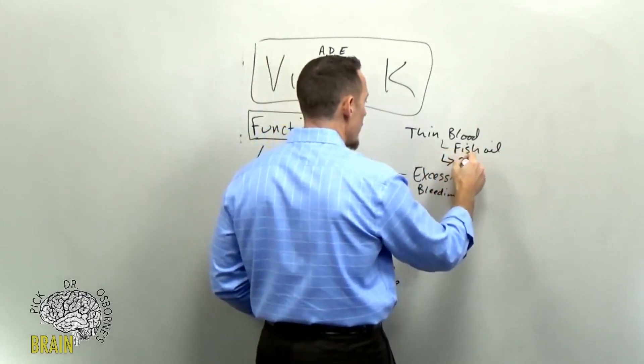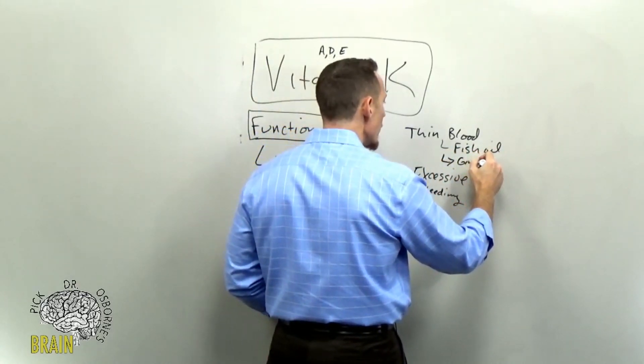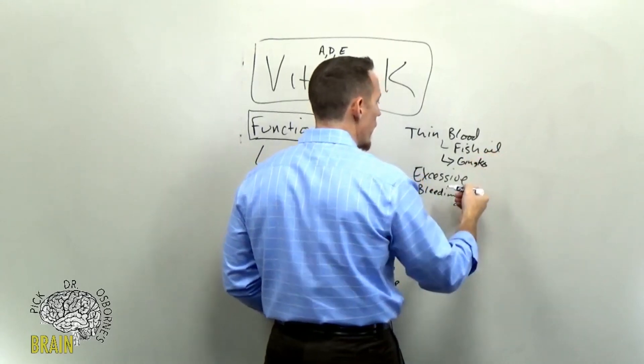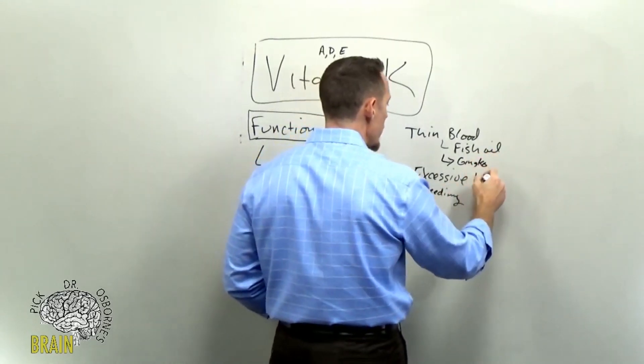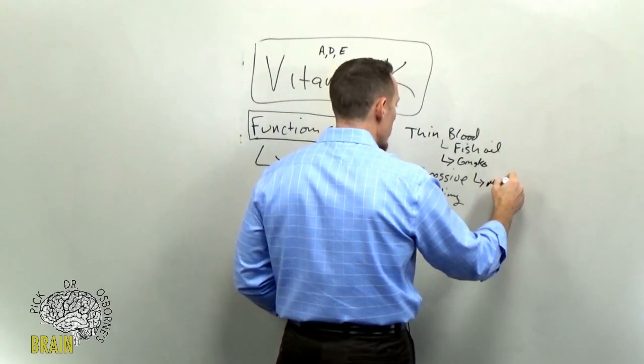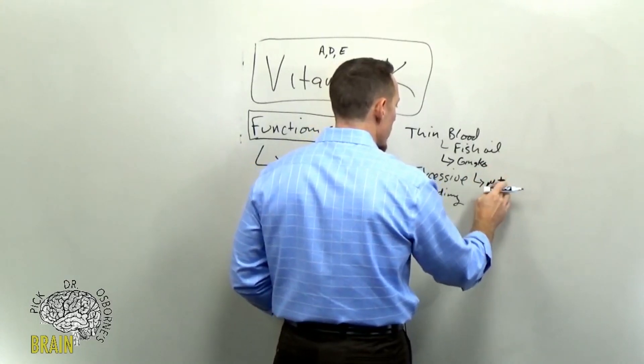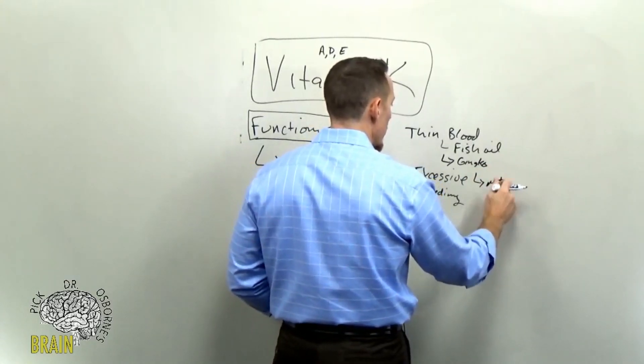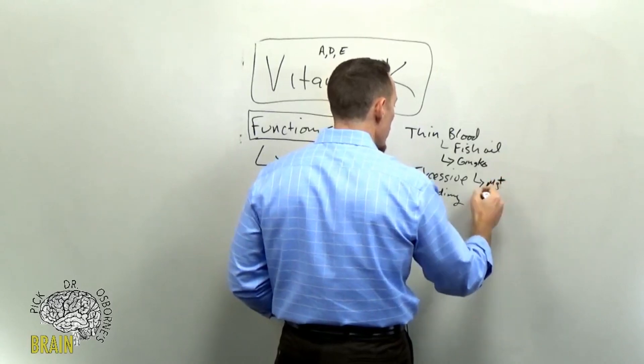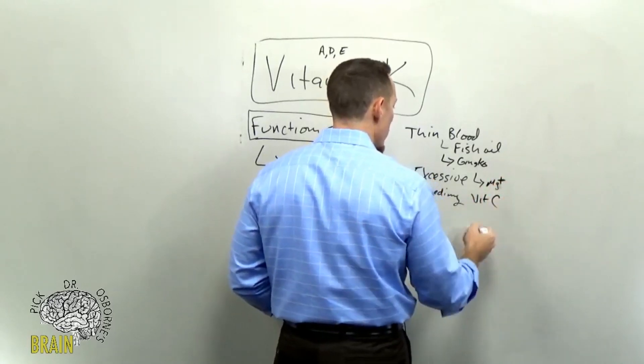Ginkgo, if you ever take ginkgo biloba, this is one that can thin the blood. Magnesium can thin your blood as well. Vitamin C can thin the blood.